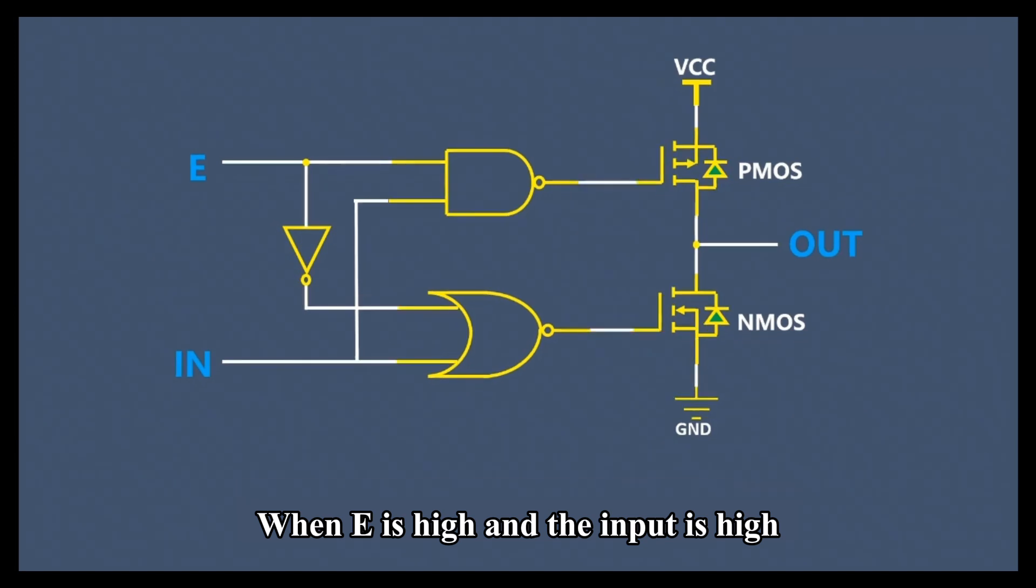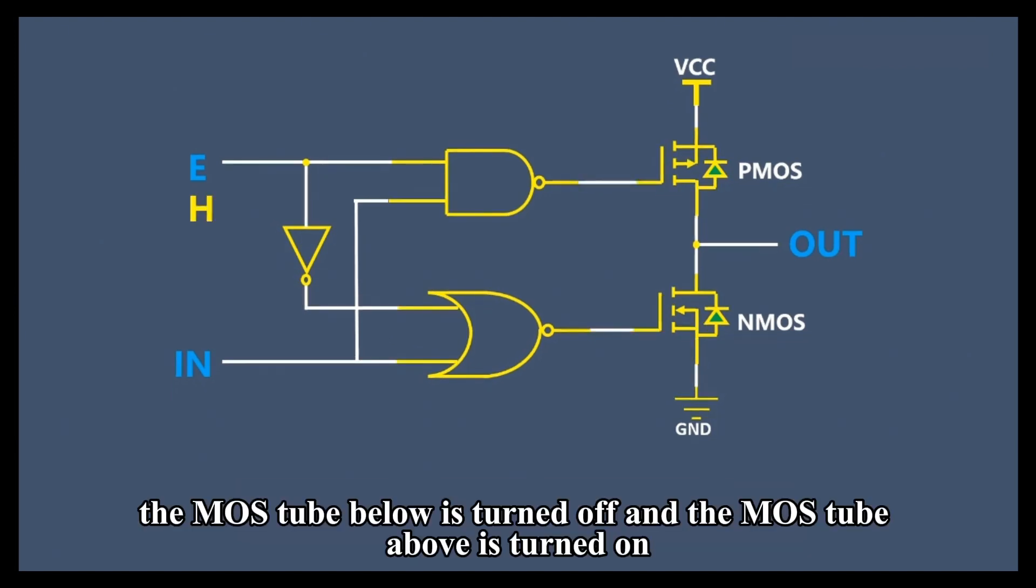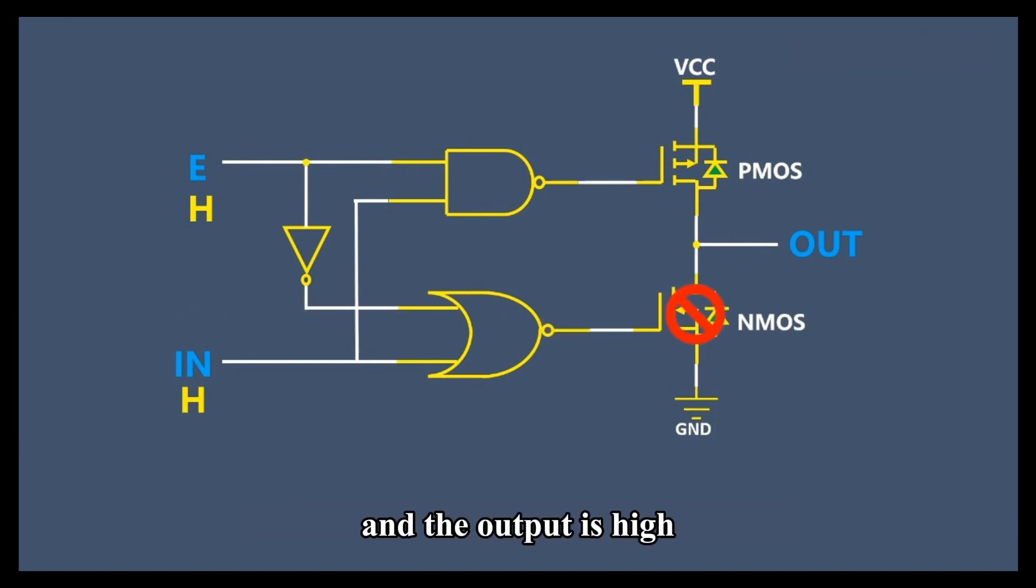When E is high and the input is high, the MOS tube below is turned off and the MOS tube above is turned on, and the output is high.